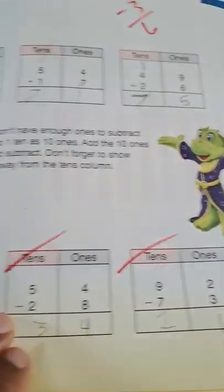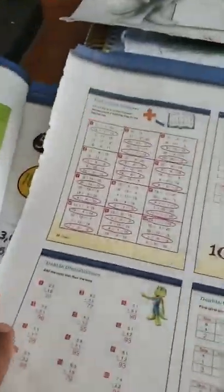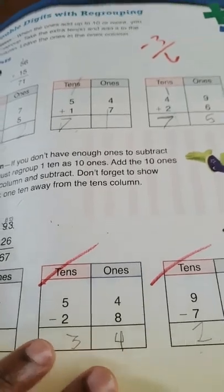And then double digits with regrouping or borrowing, which he kind of didn't really get that here where he was supposed to borrow, so we'll go back and review those. But they only gave a couple of problems so that's okay. And then that was the end.